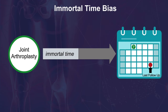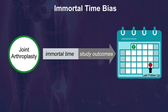In this situation, individuals in the group defined after the time delay have a period of immortality in which, by definition, the study outcome cannot occur. This is because the subjects had to: 1) survive and be followed long enough to experience the exposure, or in other words, be identified with the risk factor, and 2) not experience the study outcome or other precluding event prior to experiencing the exposure.